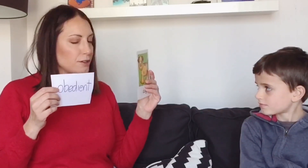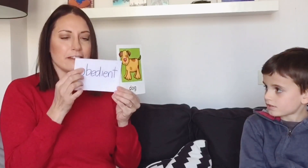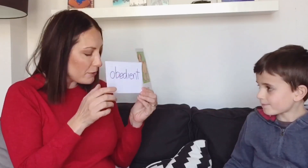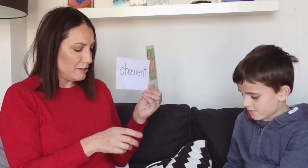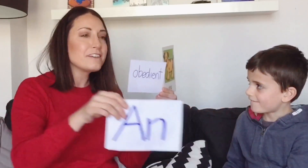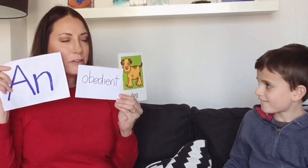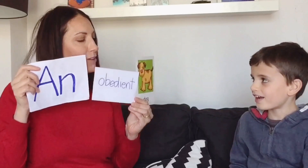If I've got 'dog' and then we put 'obedient' — can you see this? What letter is that? 'O'. So what can we put before that? 'An'. Good. An obedient dog. Can you repeat? An obedient dog. Fantastic, very good!